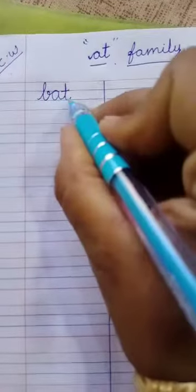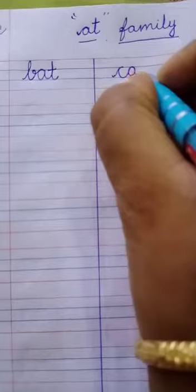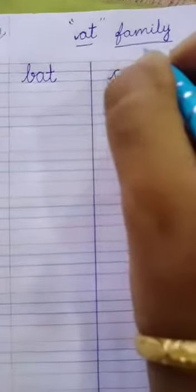A.T. Family me kya aya ka abhi? B.A.T. Bat. B.A.T. Bat. C.A.T. Cat.